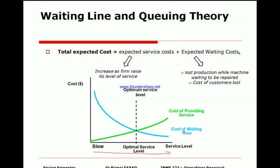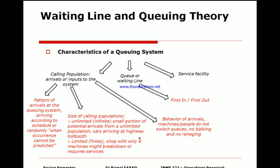When more people are hired on the checkout, the cost of waiting time and dissatisfaction decreases. You can see the contrast between the blue and the green lines. You have to find the right balance — the trade-off between the two — because you don't want to end up paying too much money on either side.